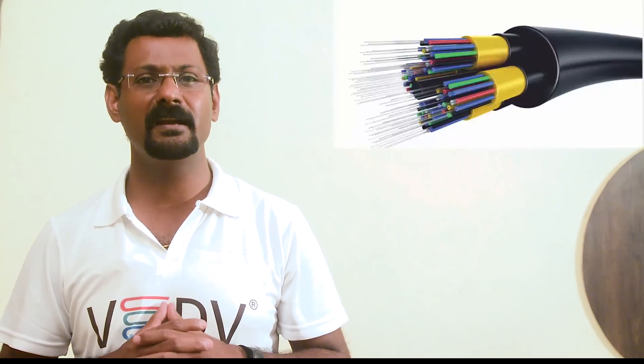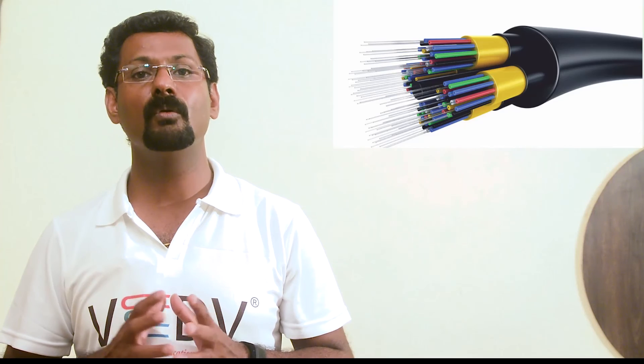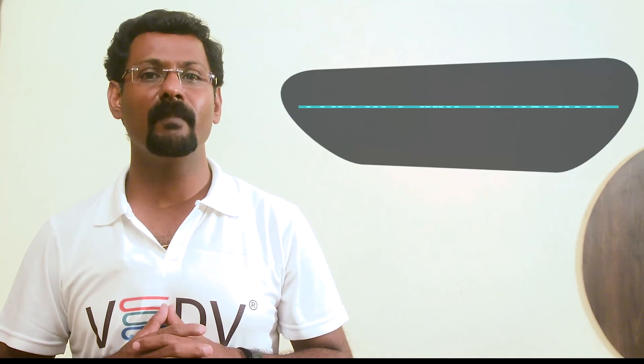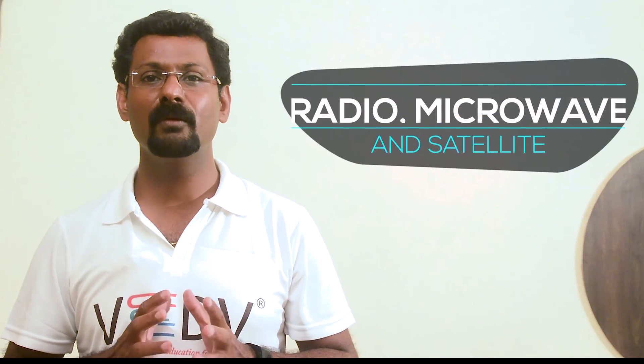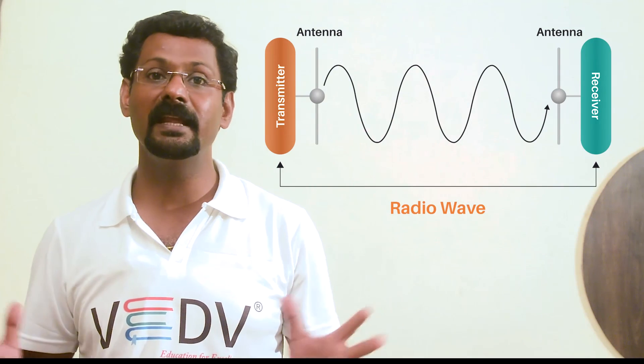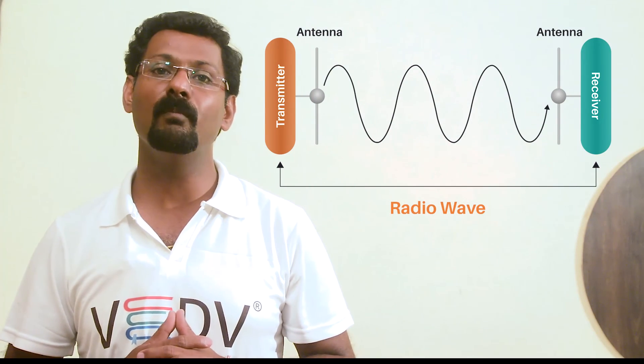Fiber optic cable: a fiber optic cable carries signals in the form of fluctuating light in a glass or plastic fiber. It has a very high data transmission rate of about 1000 Mbps. This is known as guided media. Radio waves, microwaves, and satellite: these channels use electromagnetic propagation in open space and cover large geographical areas. Examples include Wi-Fi and mobile wireless communication.